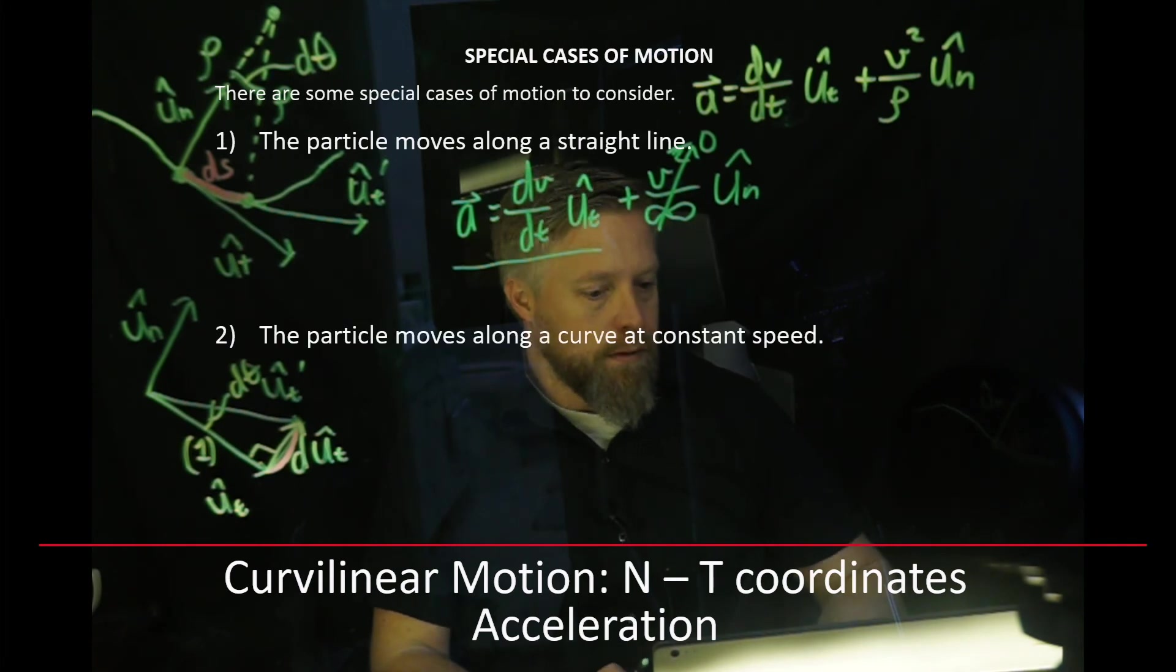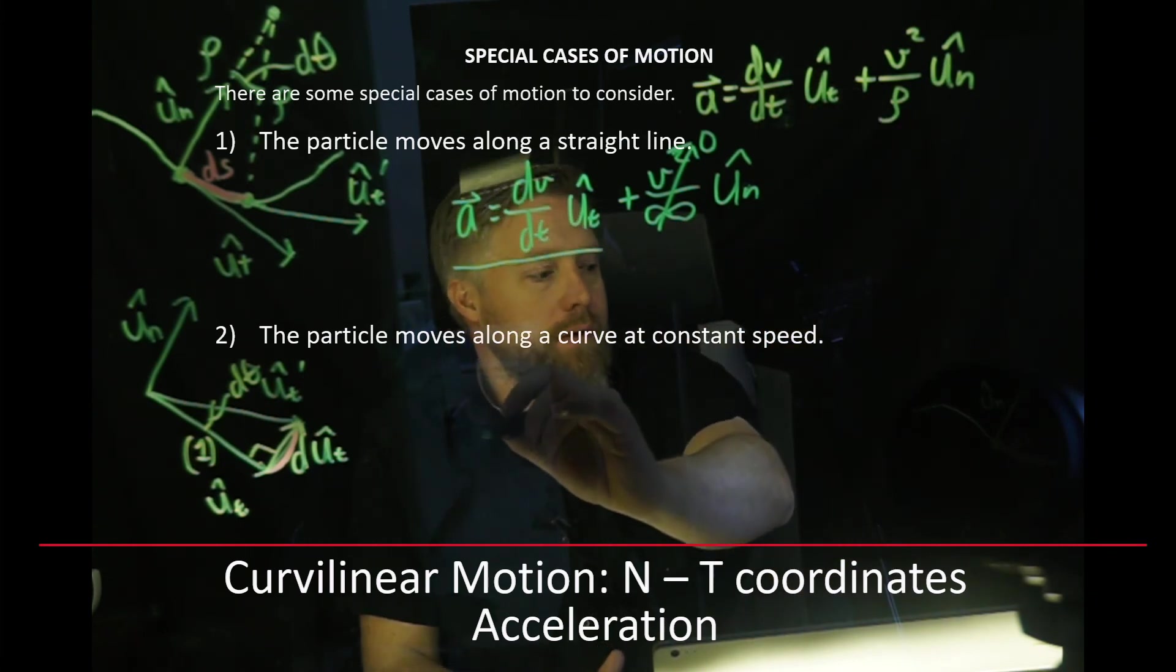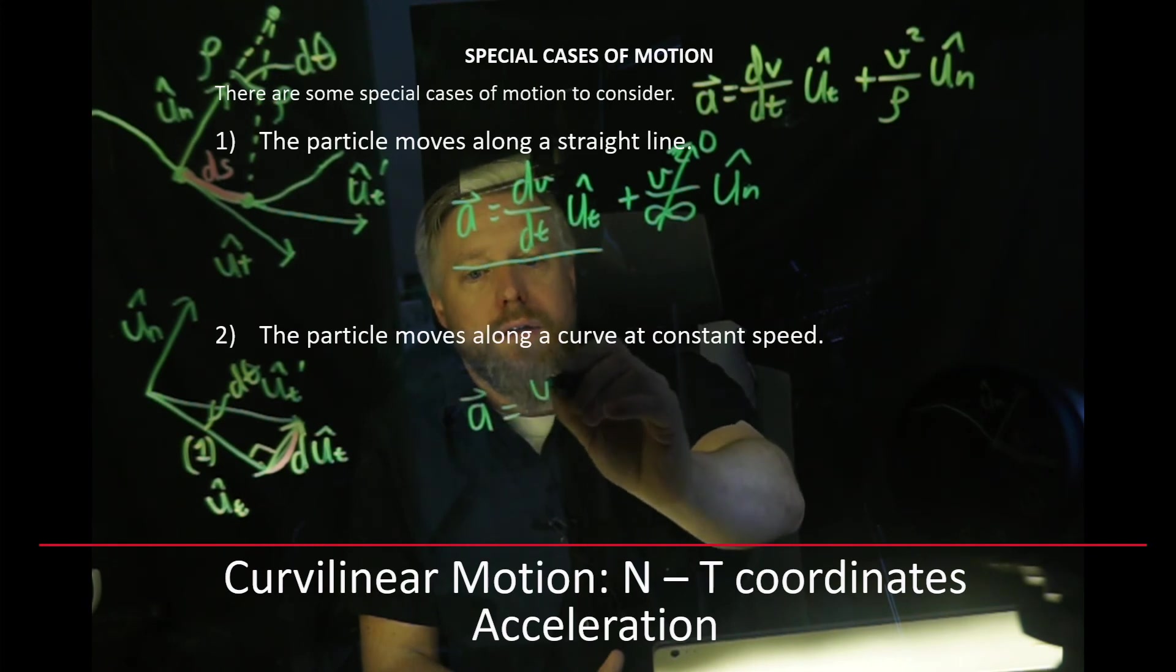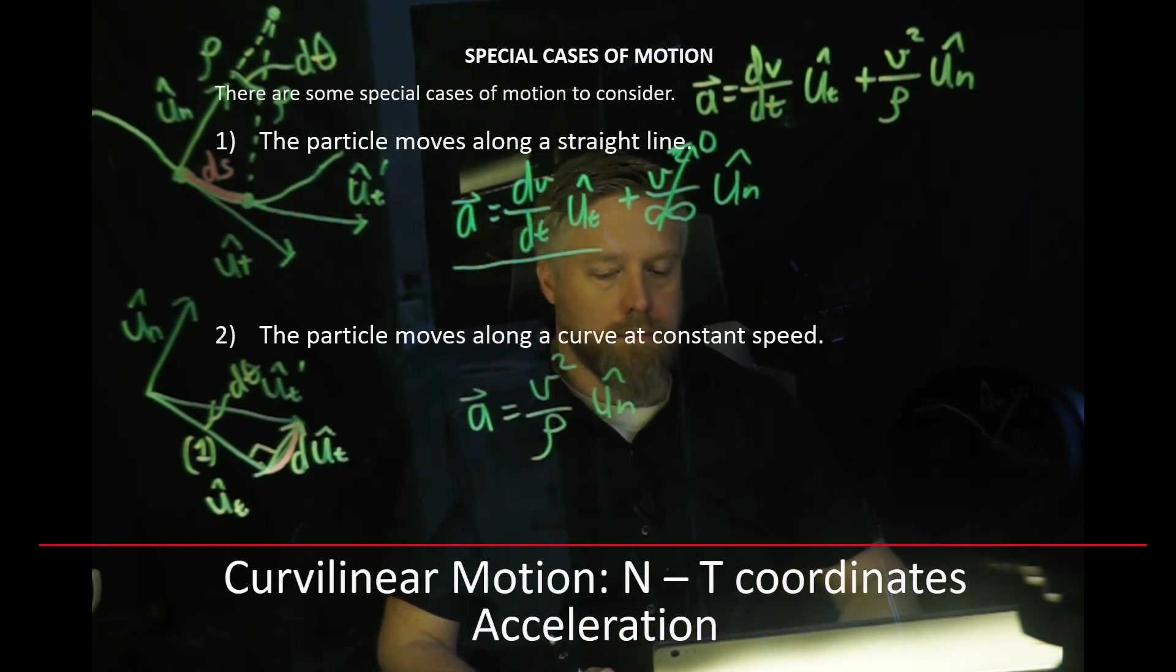Our second case, the particle moves along a curve at a constant speed. For that constant speed, our dv/dt is going to be zero. And of course, our acceleration for this one would just be the second term, v squared over rho times UN.